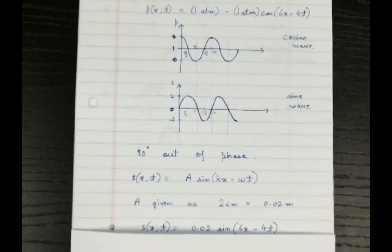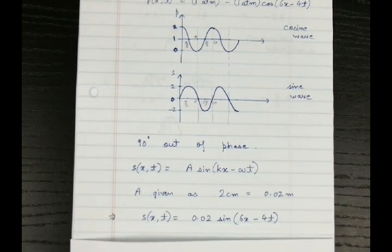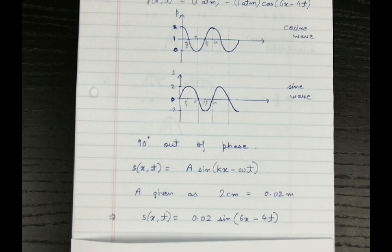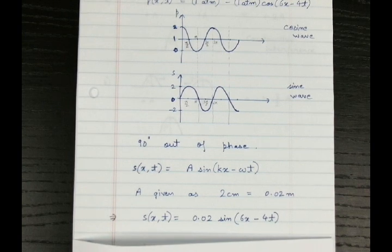So we get the final equation for a spatial wave to be S(x,t) equal to 0.02 sine 6x minus 4t, where 6 is the wave number as before, 4 is the angular frequency as before, and 0.02 is the amplitude.